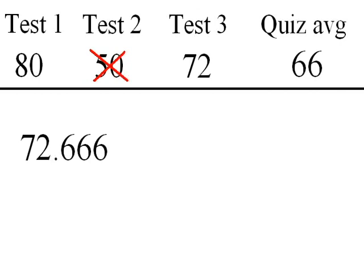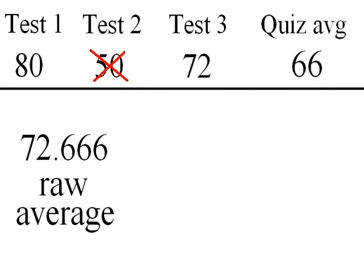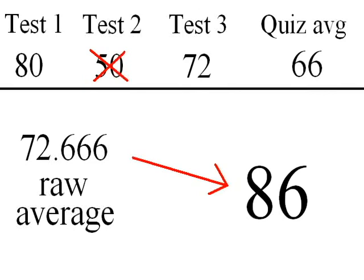This number is called your raw average. This is the number that you take half and add 50 to, giving your final grade, in this case of 86. And that's pretty much it.